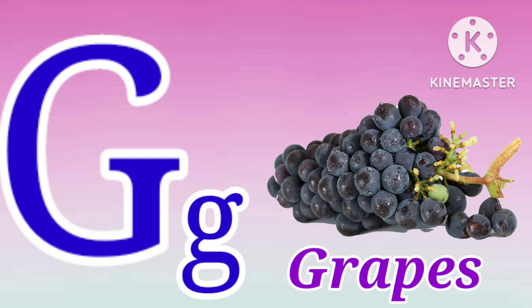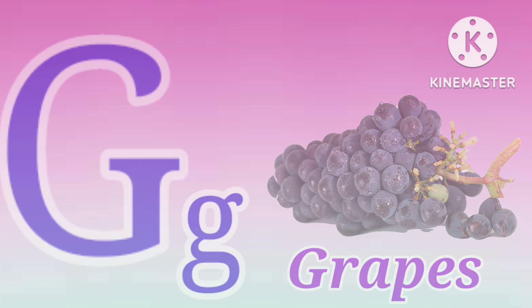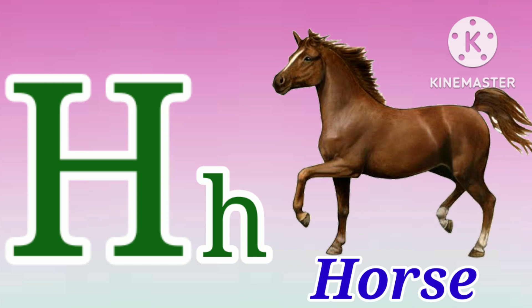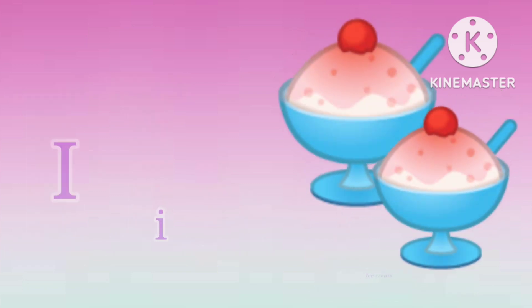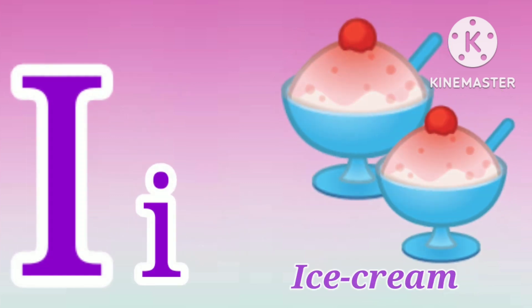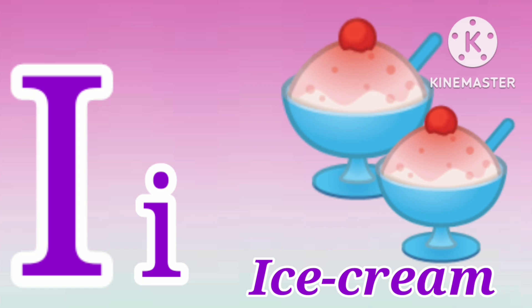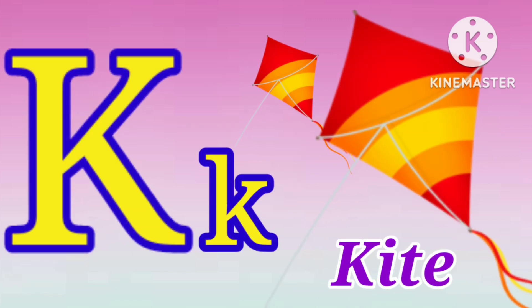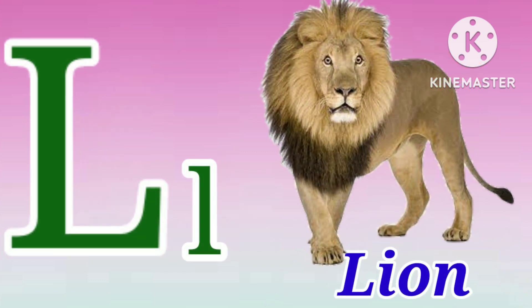G for Grapes. H for Horse. I for Ice Cream. J for Jaguar. K for Kite. L for Lion.